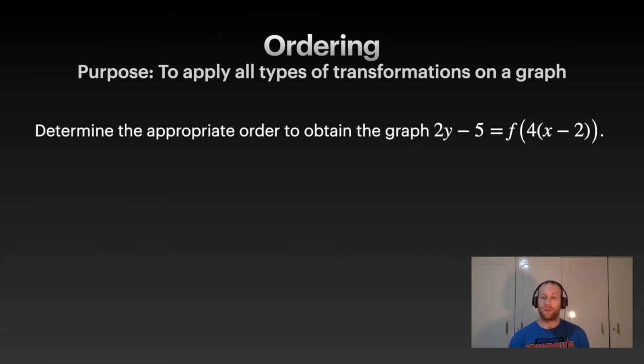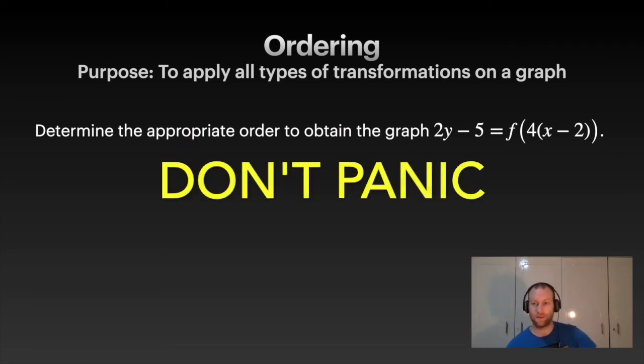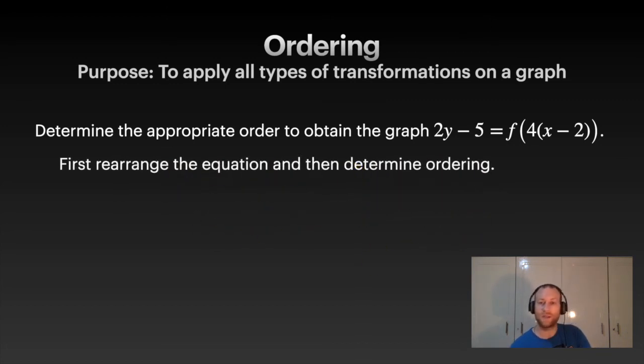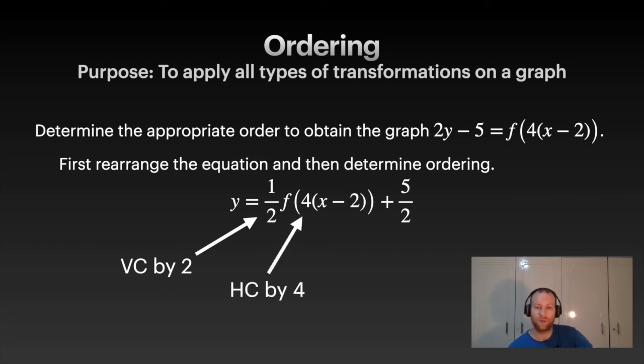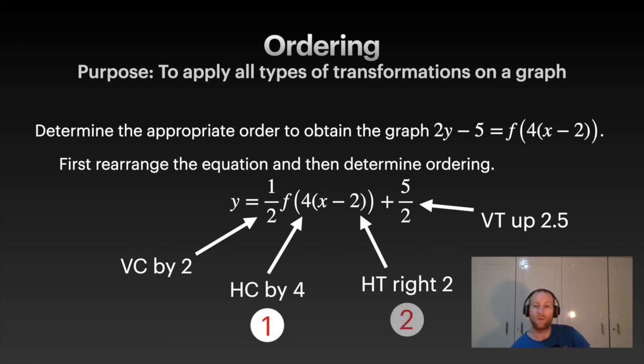Let's do another ordering question. If you see something like this, it looks a little bit different, but don't panic. Something like this isn't too bad. All you need to do first is rearrange this so that it's y equals the rest. We look at each of the different types of transformations: vertical compression, horizontal compression, horizontal translation, vertical translation. Pick the verticals, pick the horizontals first. I did horizontal first and then we did vertical. So there's the ordering. If you did the verticals first, again no worries. That's it. I told you this is going to be nice and quick.